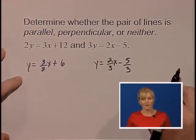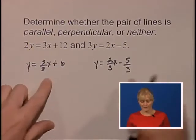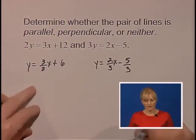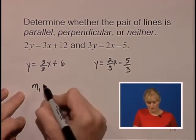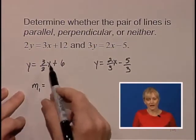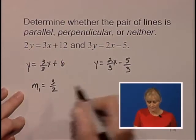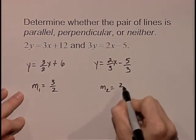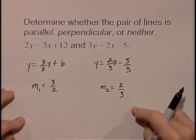We now have both equations in the slope-intercept form. We're ready to compare the slopes and make our decision. We'll label our first slope, being the coefficient of the x term, as 3 halves. Slope of our line number 2, coefficient of the x is 2 thirds.